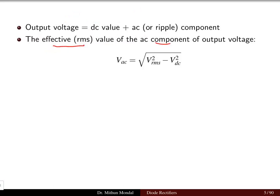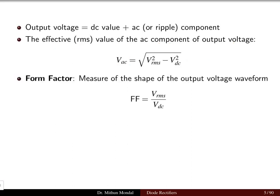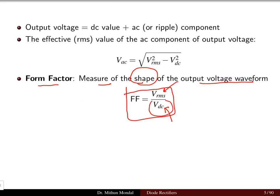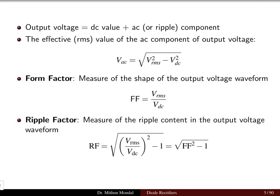The effective RMS value of the AC component of the output voltage is given by √(V_RMS² − V_DC²). The form factor, which is the measure of the output voltage shape, is given by the ratio V_RMS / V_DC. The output we require is pure DC, but some AC quantity will be present due to ripple, so the shape will not be pure DC — hence the form factor is needed.